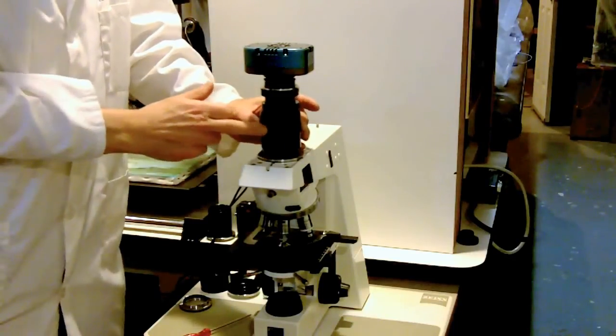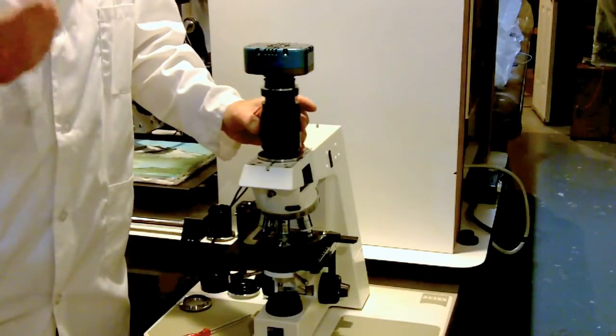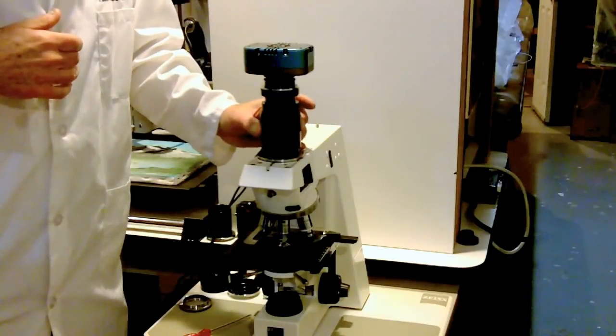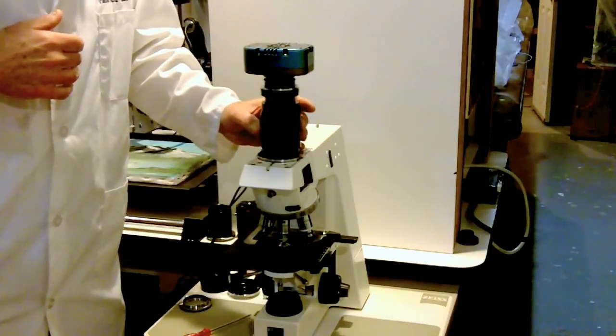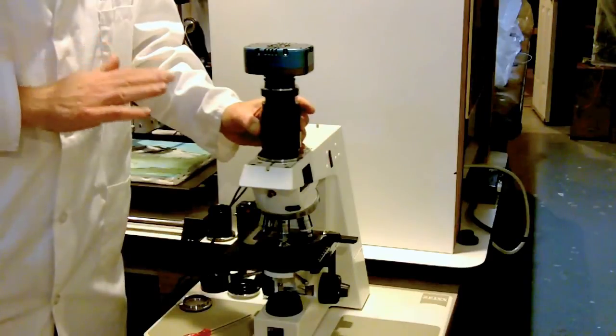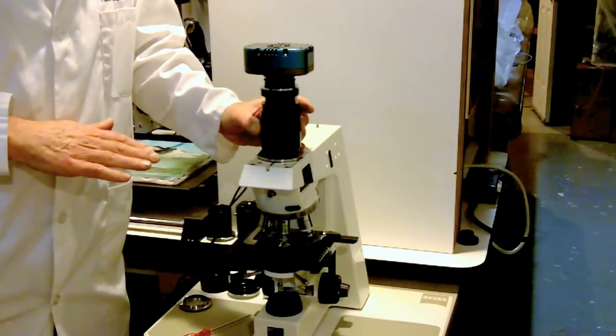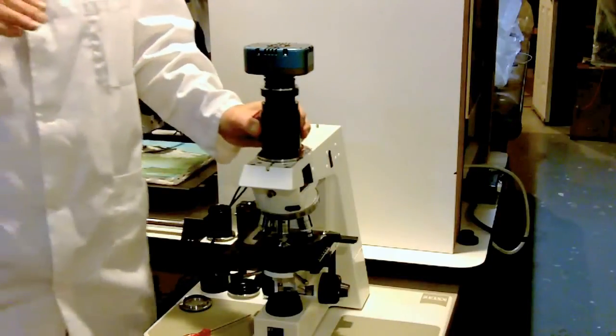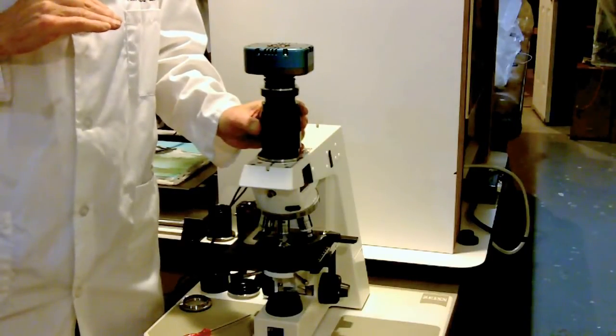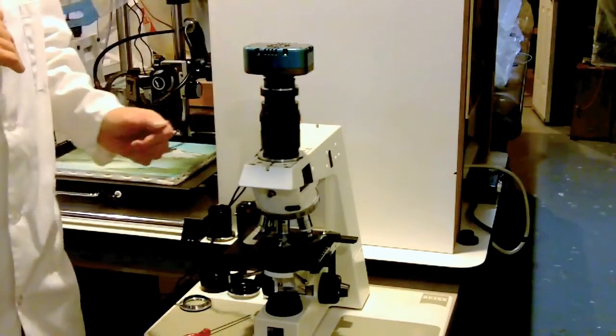So this ring right here allows you to use your mid-range dry objectives - your 20x, 25x, 40x, 50x, 63x dry objectives especially. And it solves the same problem that a cover glass correction collar would provide. So if you have objectives that do not have a cover glass correction collar, you can use this ring here to set the cover glass thickness properly for the objective to give you the best resolution possible without spheric aberration problems.